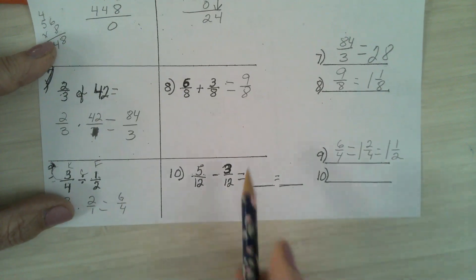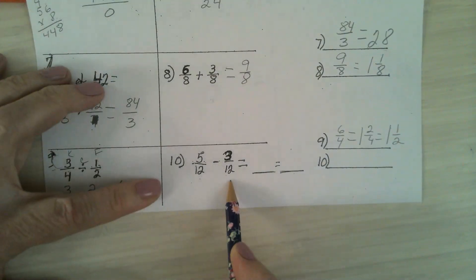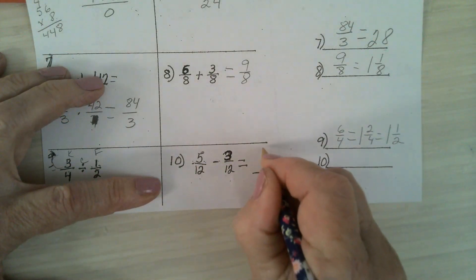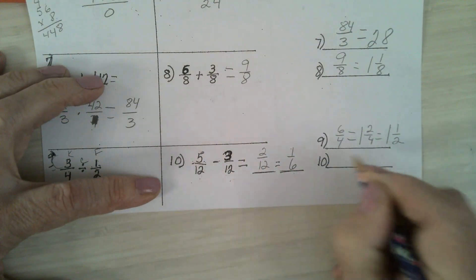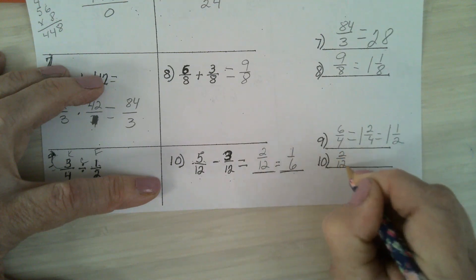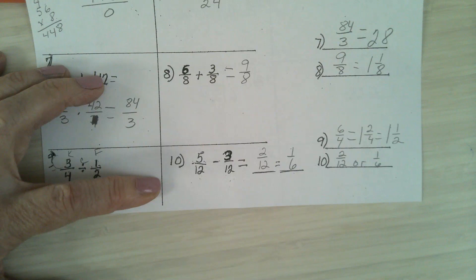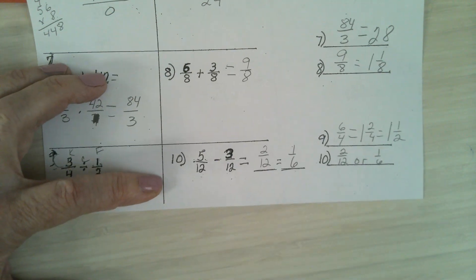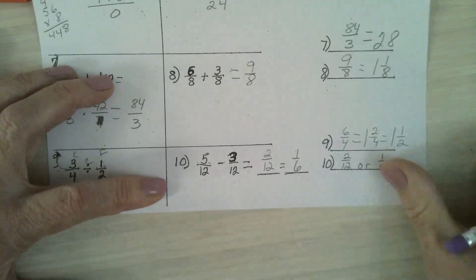In this one, 5/12 minus 3/12, the denominator is the same. So you can just subtract and you get 2/12, which equals 1/6. If you have 2/12 or 1/6, I will count it correct. If you have 2/12 and you say it equals 1/12, I have to count it wrong. Because you don't know the difference. 2/12 is not the same thing as 1/12. It's 1/6. Any questions on the front side?